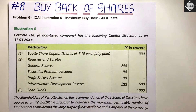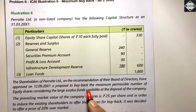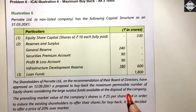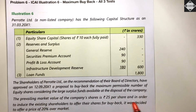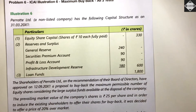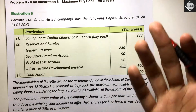The shareholders of Perot Limited, on the recommendation of the board, have approved on 12th September 2021 a proposal to buy back the maximum permissible number of equity shares, considering the large surplus funds available. The prevailing market value of the company's shares is Rs. 25 per share — that's market price, not buyback price. In order to induce existing shareholders to offer their shares for buyback, it was decided to offer at a price 20% over the market price, because nobody will sell their shares if the company offers at or below market price.